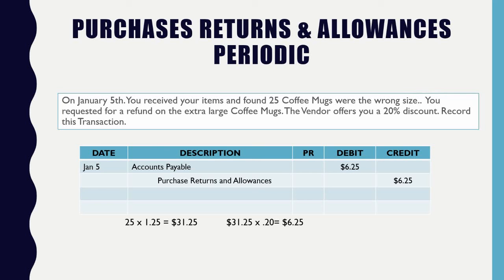One key difference here is that you are not actually returning the coffee mugs — they're still something you purchased. But you're getting a discount on top of it. An allowance is basically not the full money back, but a portion of the money back, whether you keep the items or not. In this case we're keeping the items but getting a 20% discount off them. Purchase returns and purchase allowances actually function the same way, so the account is called Purchase Returns and Allowances.